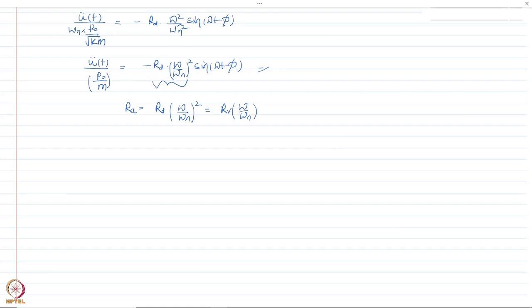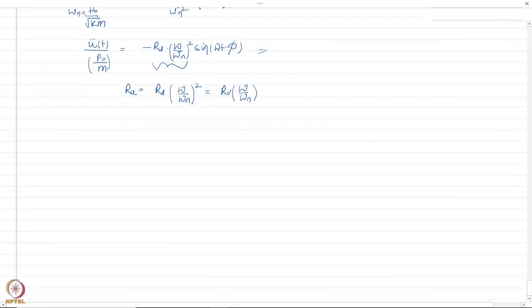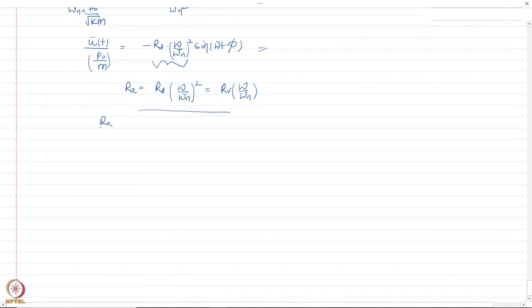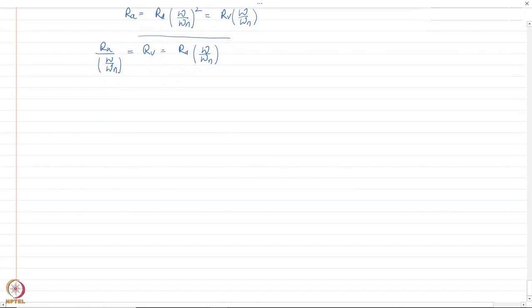These quantities can be further written as: Rv = Rd · ω and Ra = Rd · ωn (in normalized form). We already know the variation of Rd with ω/ωn — what happens when ω/ωn is very small, very large, and when it is close to 1. Based on that, we can obtain the variation of Rv and Ra as functions of ω/ωn.